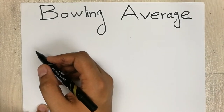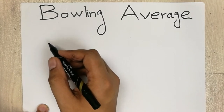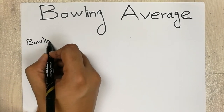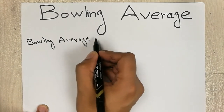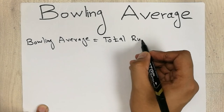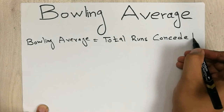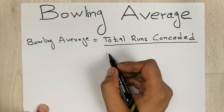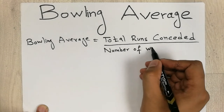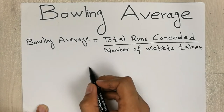Hello guys, I hope you are doing really well. In today's video I am going to show you how to calculate bowling average in cricket. The formula for bowling average is: bowling average equals total runs conceded divided by number of wickets taken.